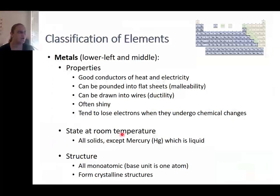Let's look at these groupings in more detail. First we have the metals, which is the largest group of elements found on the lower left and middle of the periodic table. Generally metals share certain properties: they are good conductors of heat and electricity, they can be pounded flat into sheets (malleable) or pulled into wires (ductile), they are often shiny, and tend to lose electrons when they undergo chemical changes. All metals are solids at room temperature except for mercury, which is a liquid.